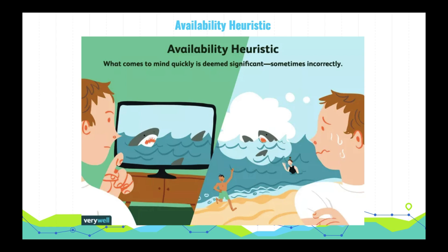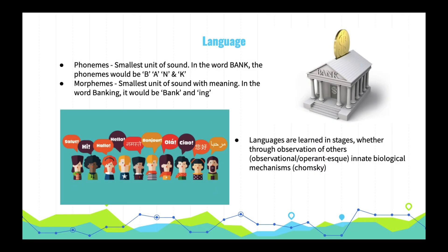Finally, let's discuss language — the tool that allows humans to communicate our stories and knowledge across time and distance. The building blocks of all languages are distinctive basic sounds called phonemes. The word 'run' has three phonemes: R, U, N. 'Bank' has four. We also combine phonemes into morphemes — the smallest meaningful units — such as 'cat.' There are also prefixes and suffixes like '-ed' and '-ing.'